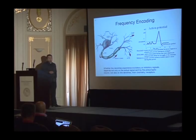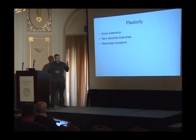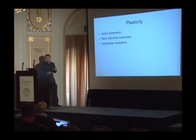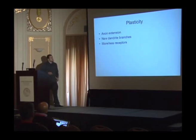One of the most important parts of the neuron that makes it so powerful as a signal integrator is its ability to learn. The plasticity of the neuron is what allows it to learn. It can produce new axon extensions, new dendrite branches, and of course increase or decrease the number of receptors, thereby changing the way it processes signals and giving you the ability to memorize and learn new things.